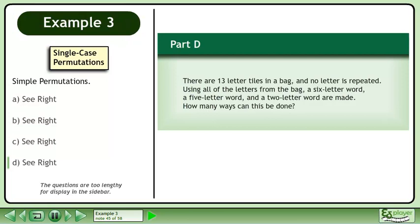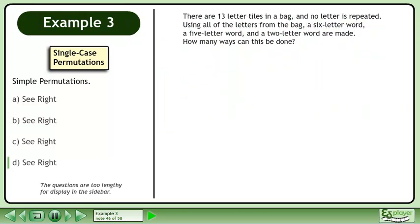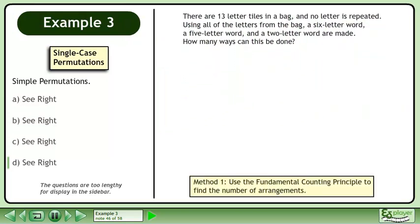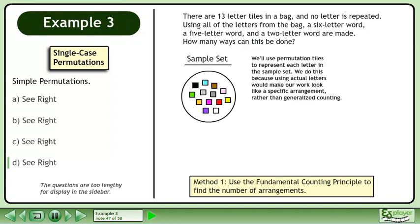In Part D, there are 13 letter tiles in a bag and no letter is repeated. Using all of the letters from the bag, a 6-letter word, a 5-letter word, and a 2-letter word are made. How many ways can this be done? In Method 1, use the Fundamental Counting Principle to find the number of arrangements. We'll use permutation tiles to represent each letter in the sample set, because using actual letters would make our work look like a specific arrangement rather than generalized counting.